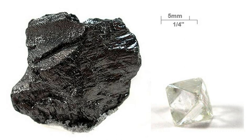Carbon combines with some metals at high temperatures to form metallic carbides, such as the iron carbide cementite in steel and tungsten carbide, widely used as an abrasive and for making hard tips for cutting tools. The system of carbon allotropes spans a range of extremes.